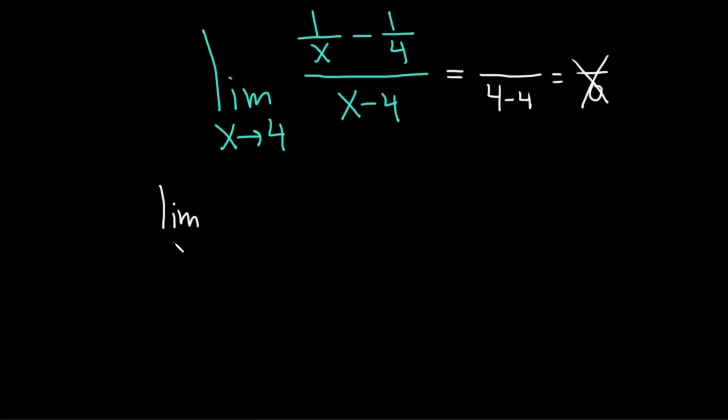Let's go ahead and rewrite our limit. x approaches 4, and we have 1 over x minus 1 over 4. That's all being divided by x minus 4.